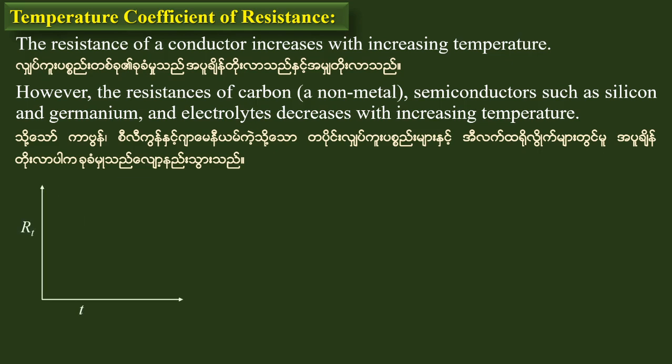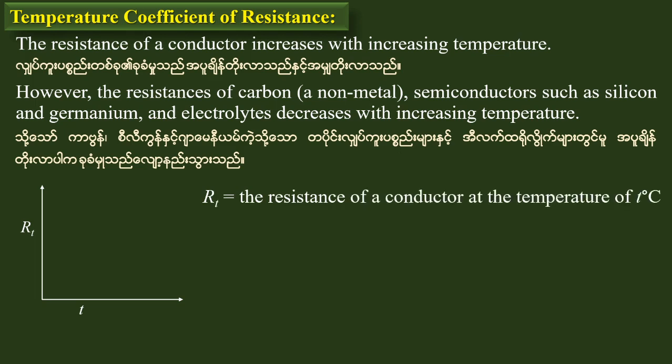The system is resistant to the environment. Small t is the temperature. Small t is the resistance of a conductor at a temperature of 10 degrees Celsius.